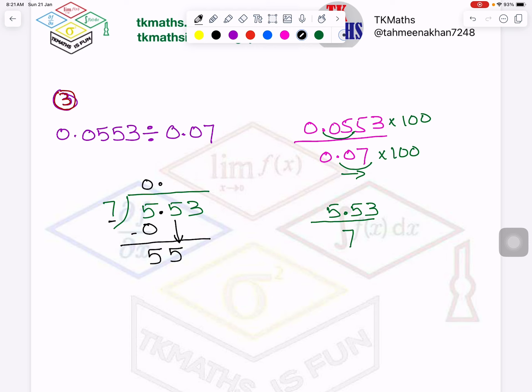Now 7 times 7 is 49. And 7 times 8 is 56. Just writing it for you. 7 times 7 is 49. And 7 times 8 is 56. 56 is bigger than 55. So I will stick to 7 times 7. And now I will subtract. It is 6. 55 minus 49 is 6.